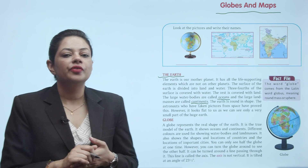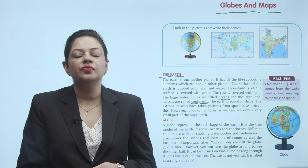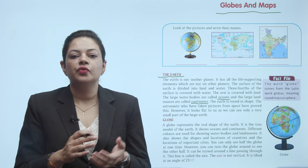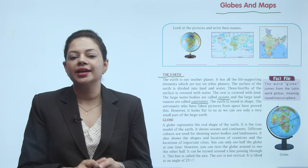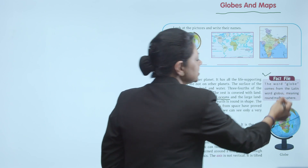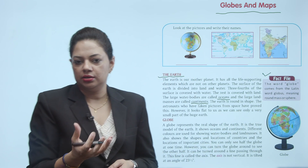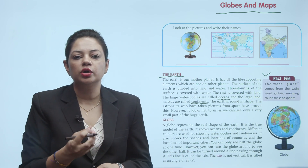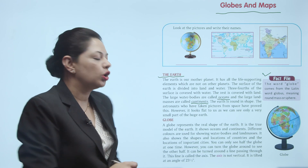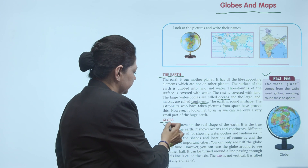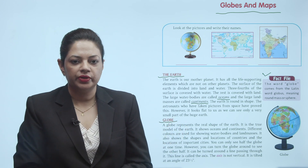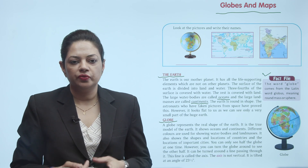The word 'globe' comes from the Latin word 'globus' meaning round mass or sphere. A globe represents the real shape of the Earth. It is the true model of the Earth.